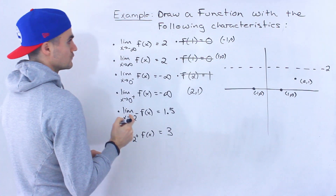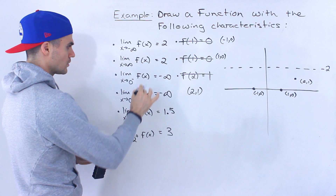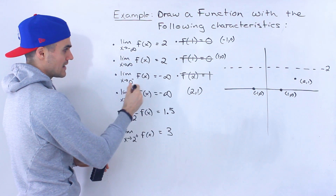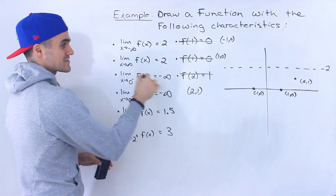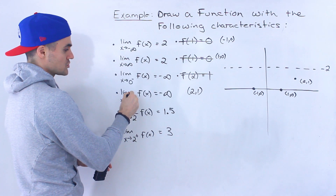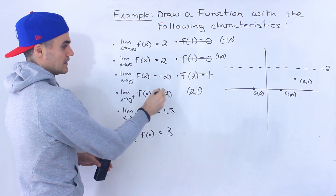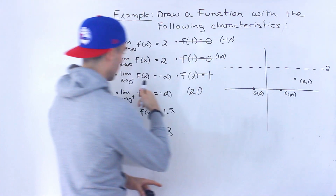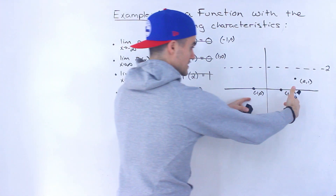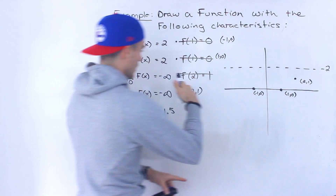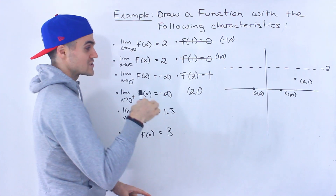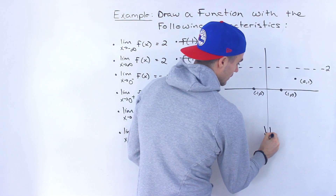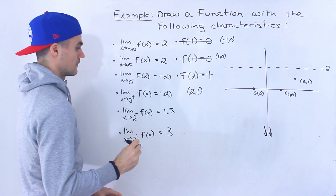Next, the limit as x approaches 0 from the negative side equals negative infinity, and as it approaches from the positive side it also equals negative infinity. That means as we approach x = 0 from both sides, the y-values are going toward negative infinity — so the function is going down on both sides of x = 0.